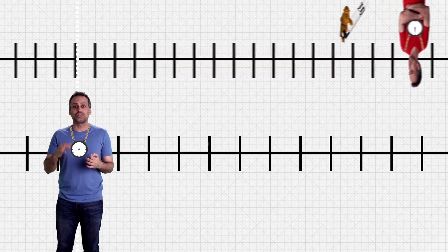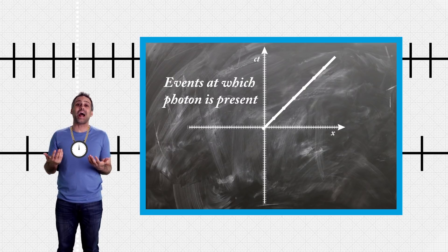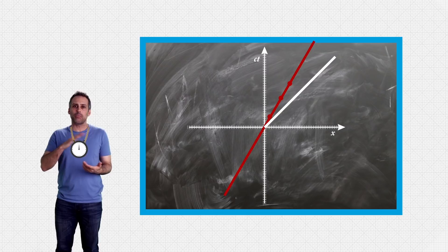Say I plot the values of ct on my clock as the photon passes different marks on the x-axis. I get a nice 45-degree line, thanks to the funky vertical axis units I was using. If I do the same for the guy in red, I also get a line. But that one is more vertical, since he moves slower than the photon.